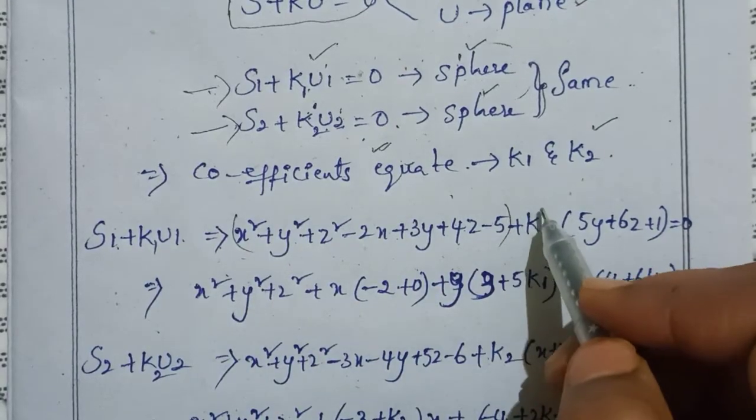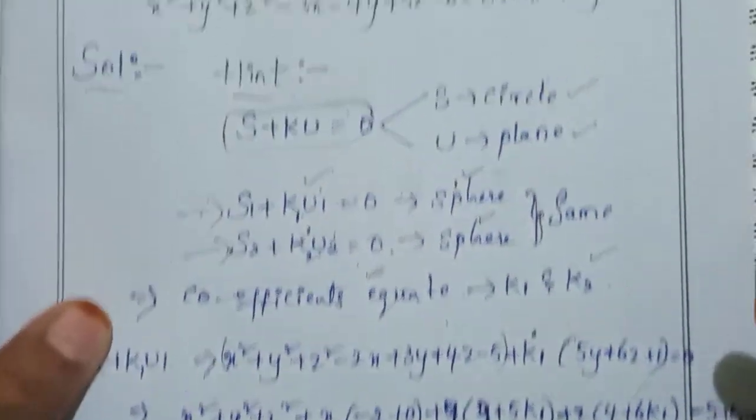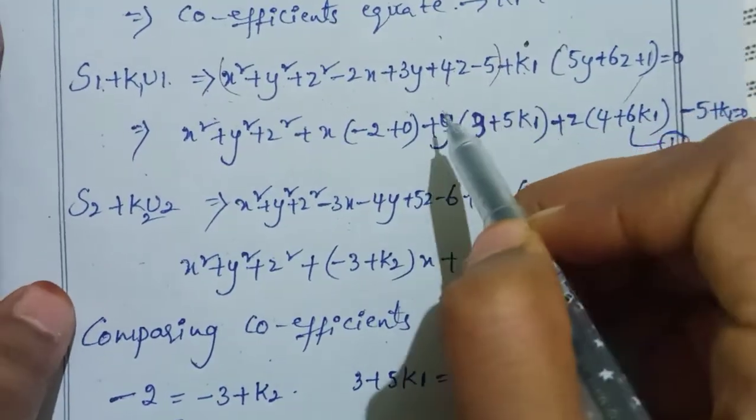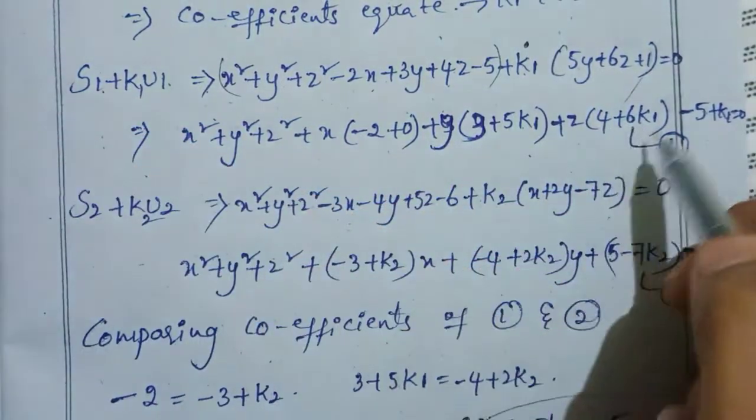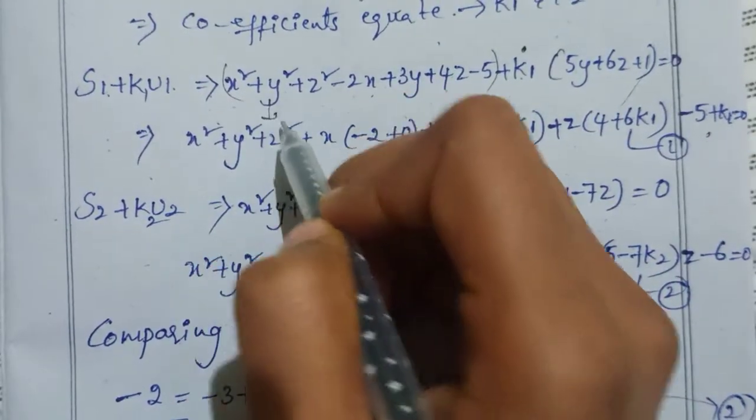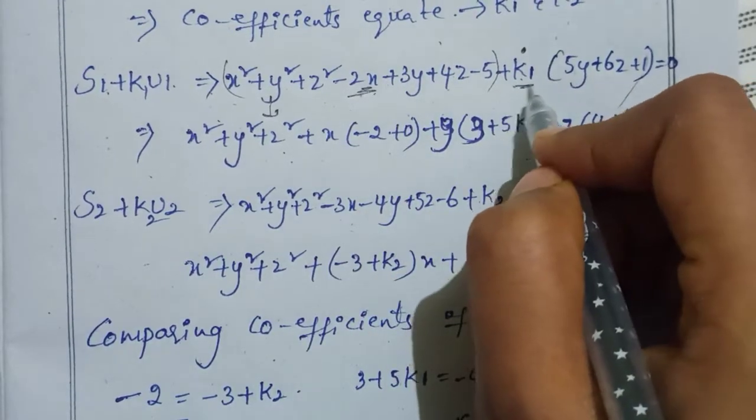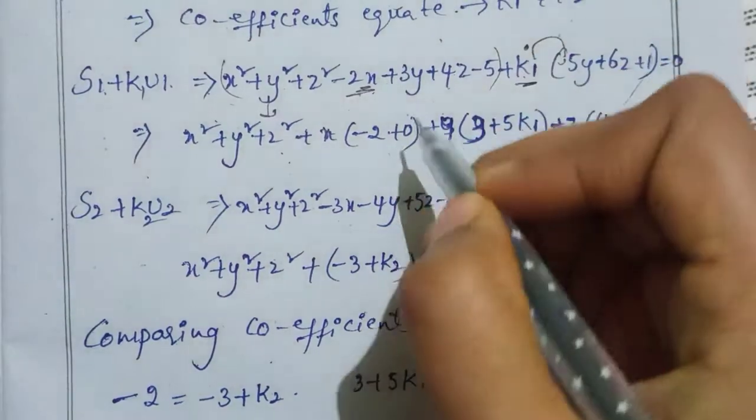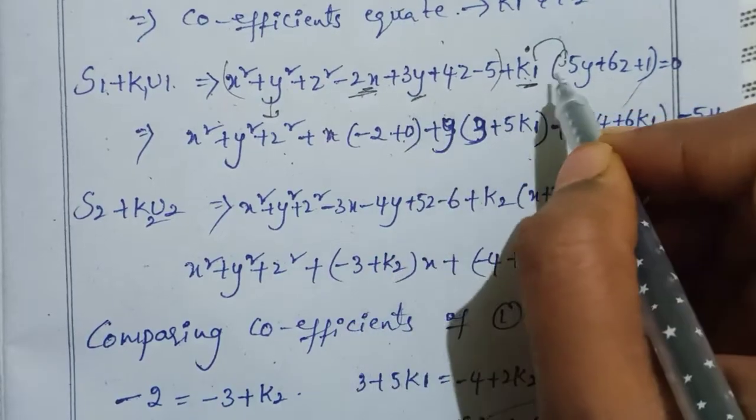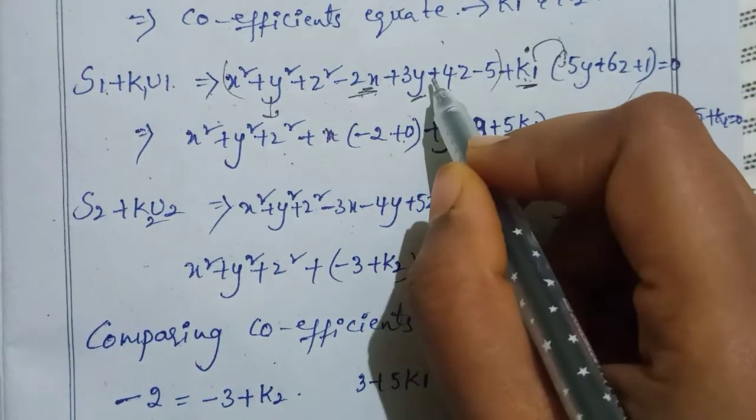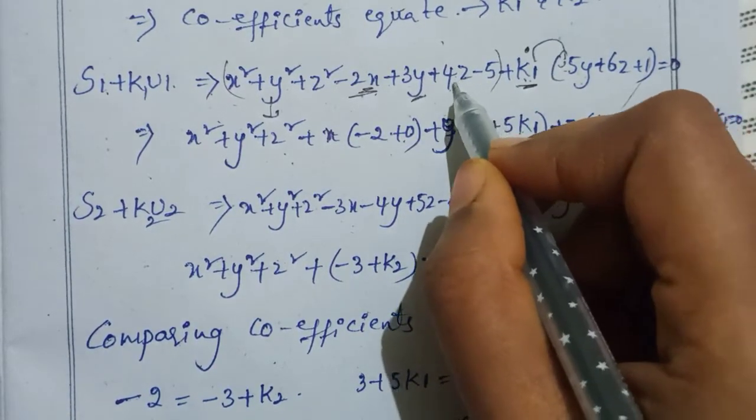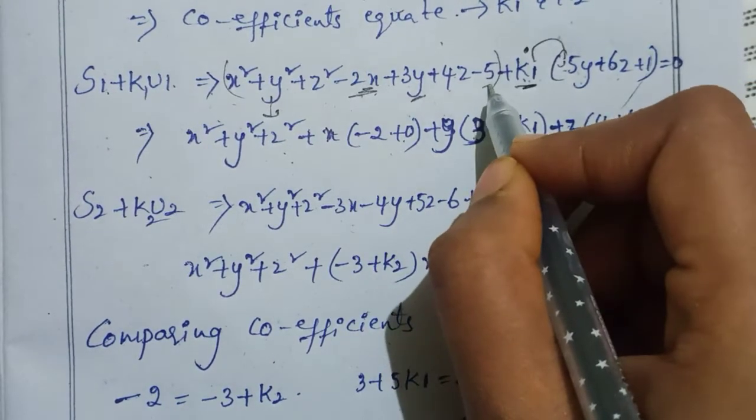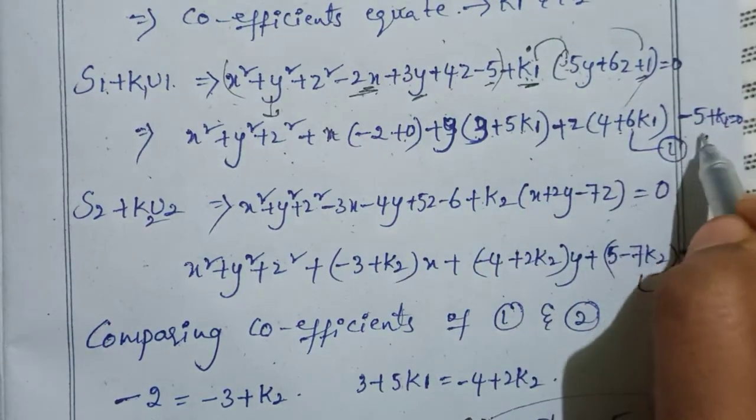So S1 is the first circle plus K1 times U1 which is 5y+6z+1 equals 0. Opening the brackets and comparing coefficients: x coefficient is -2, y coefficient is 3+5K1, z coefficient is 4+6K1, and constant is -5+K1=0.